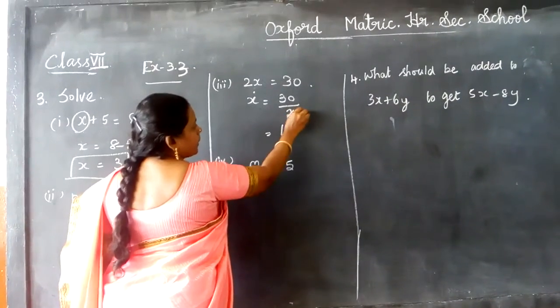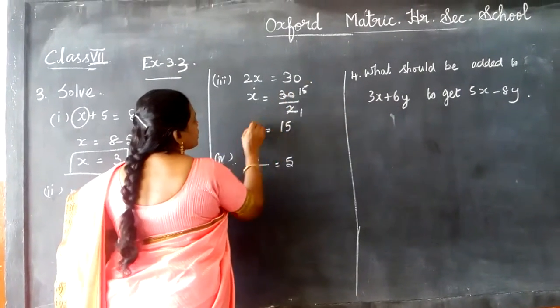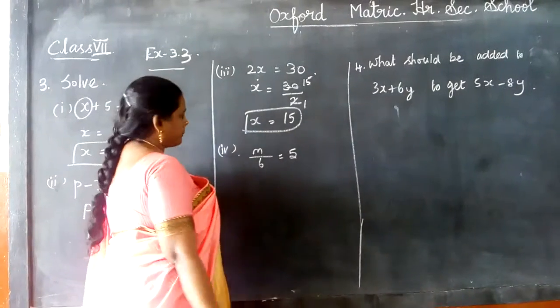So when I divide this, 2 into 30 is 15, so the value of x is equal to 15.